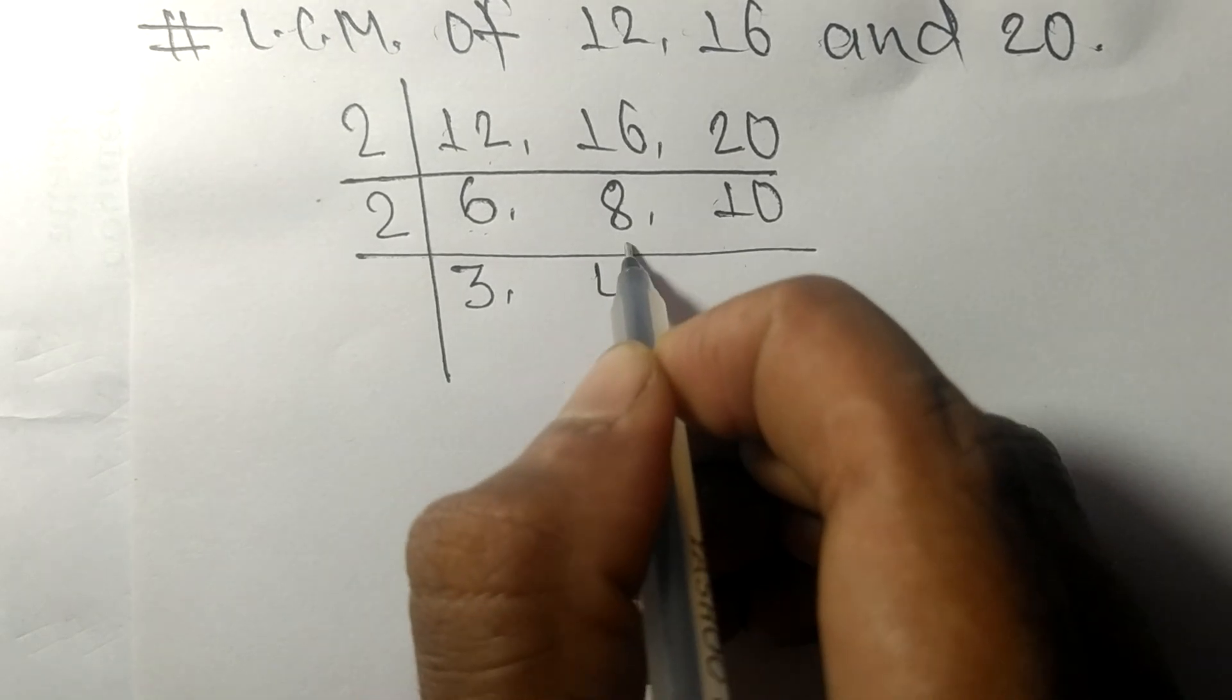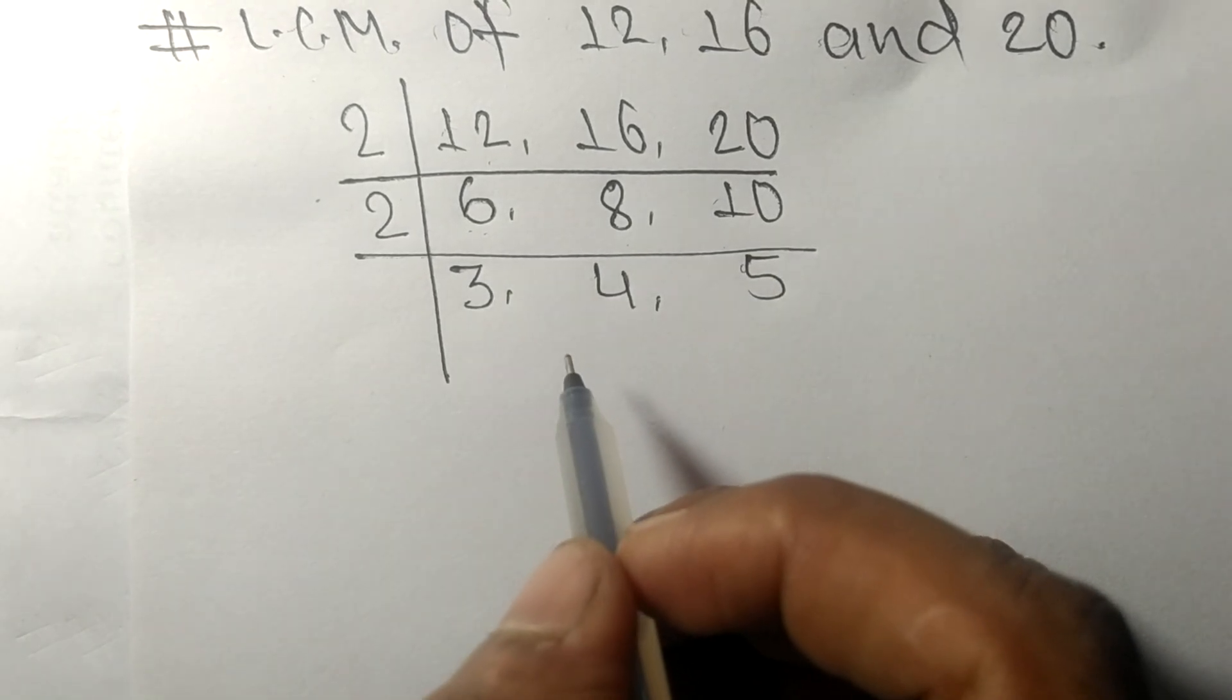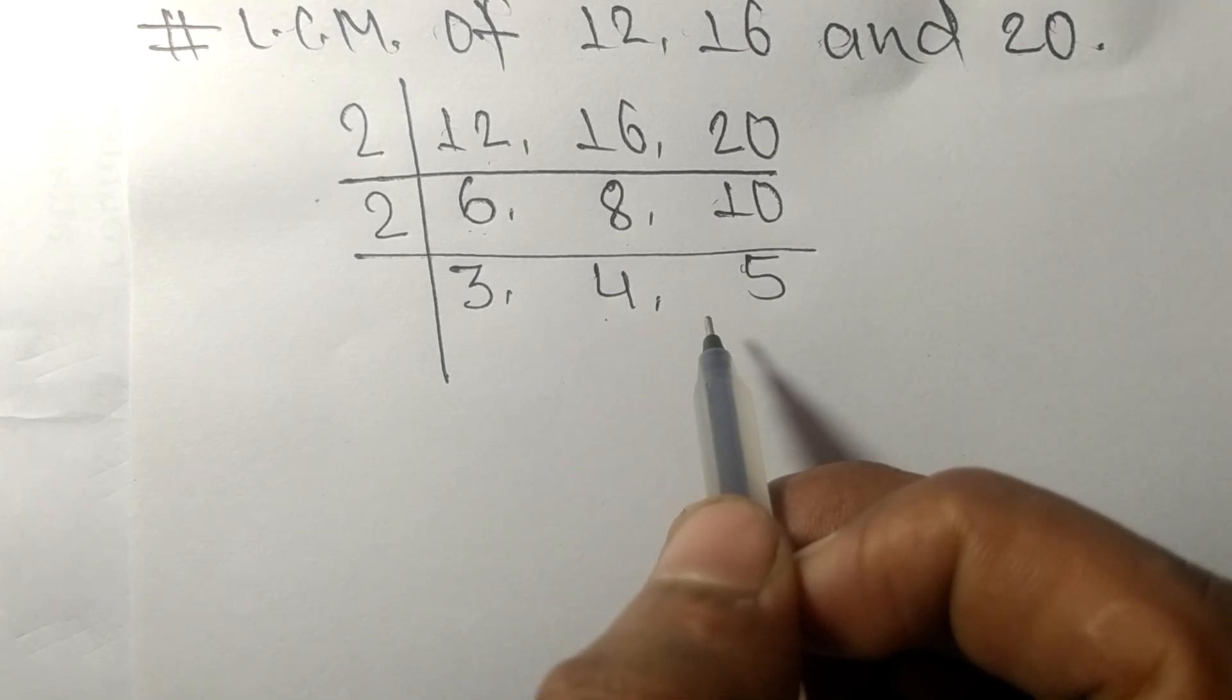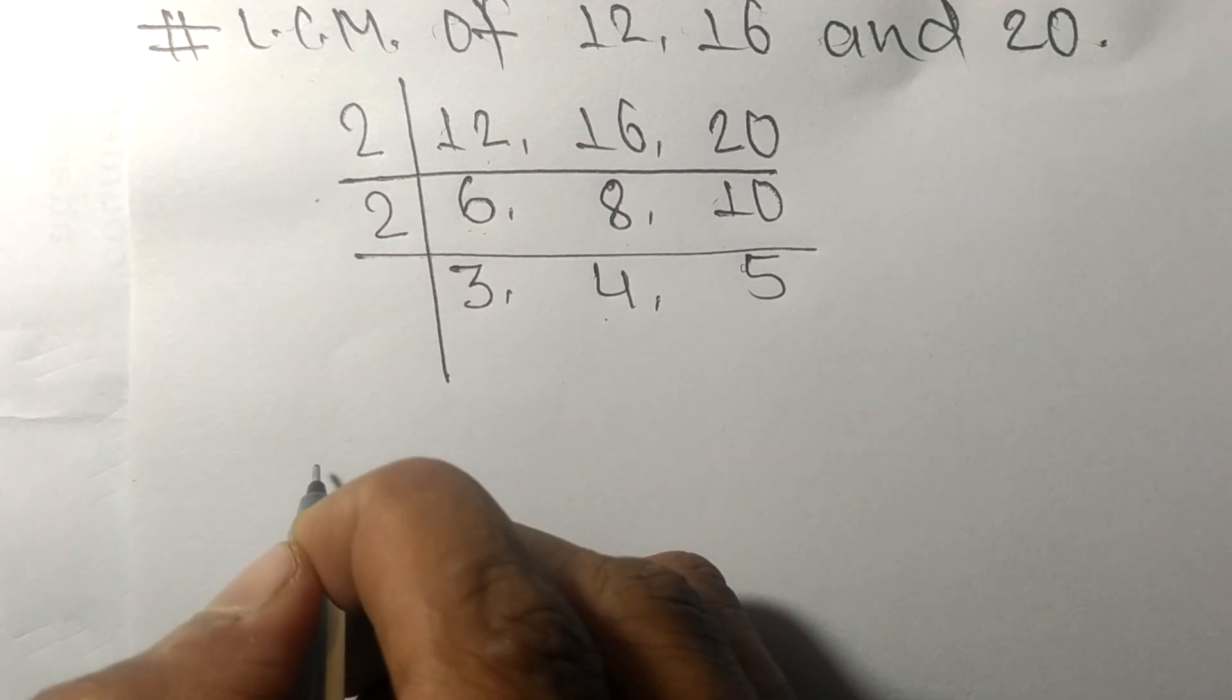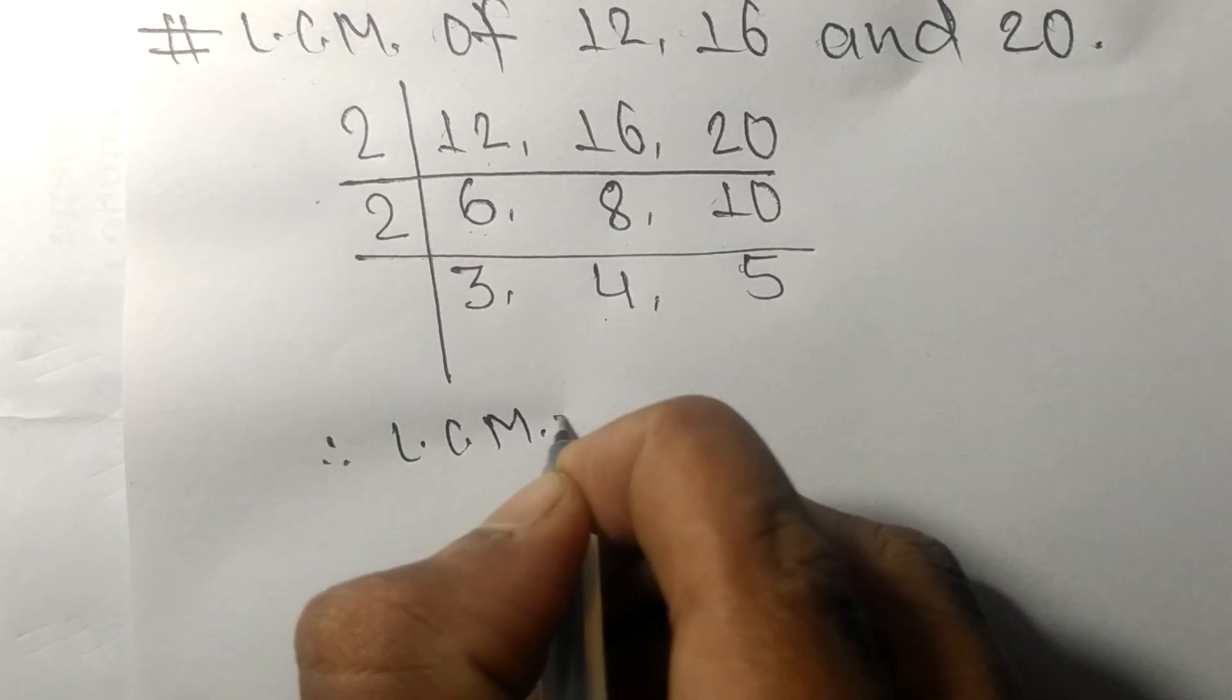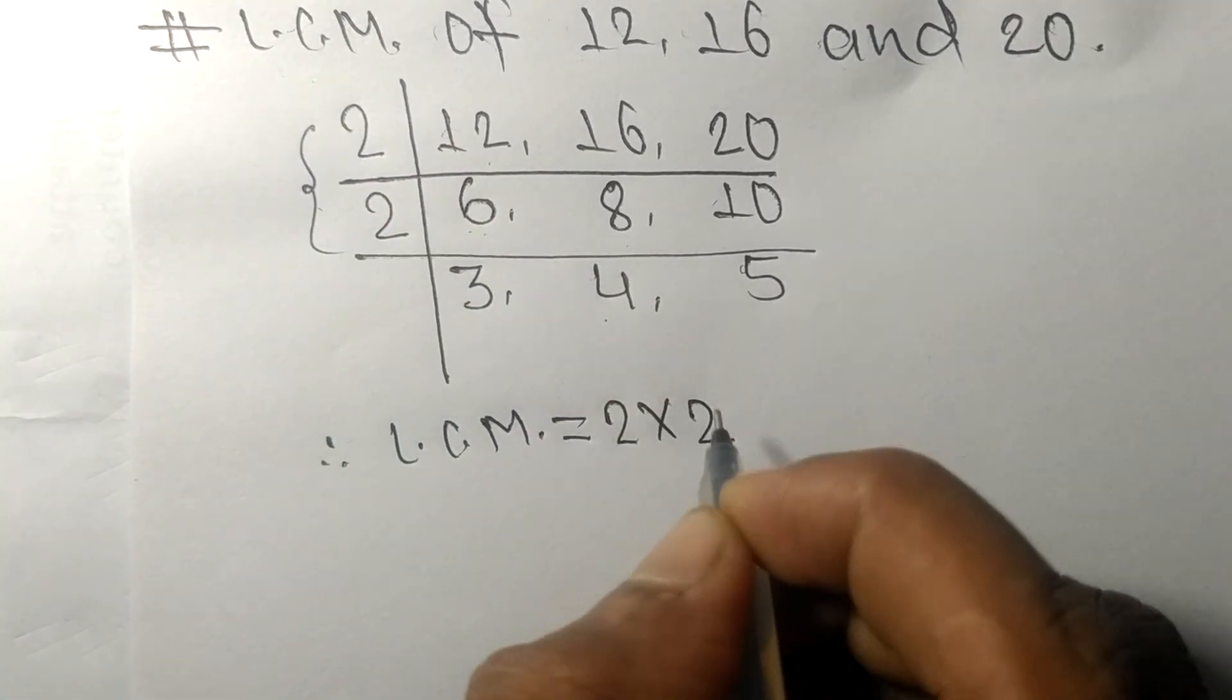Now we got 3, 4 and 5, which are not exactly divisible by the same number. Therefore its LCM is equal to, from this side it is 2 and 2, from this side it is 3, 4 and 5.